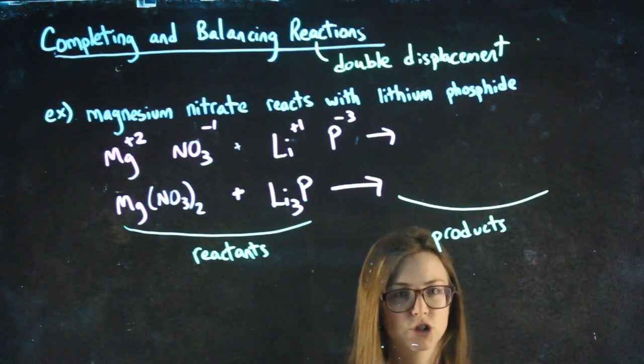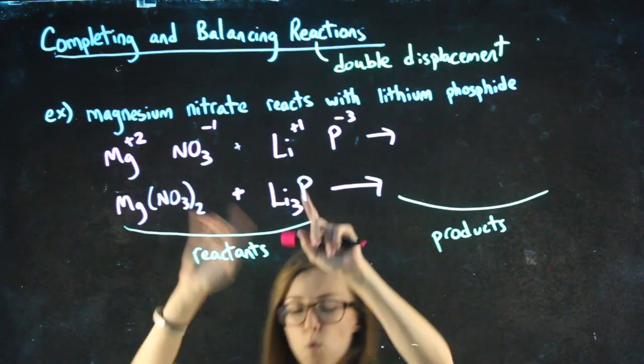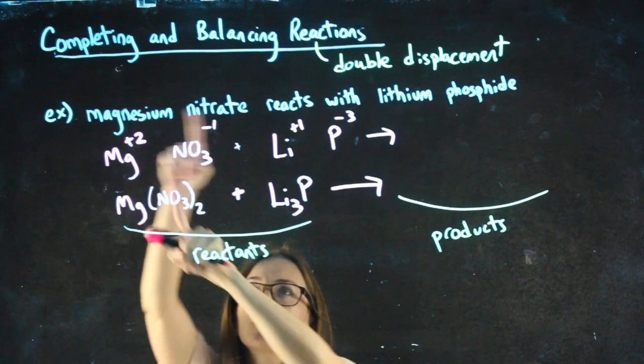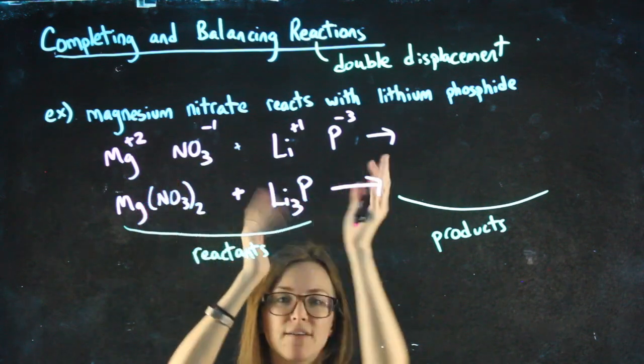I always write the positive one first, is something else you'll notice. So one way of thinking about it is that my two positive ions are going to switch places with each other to have a new partner.